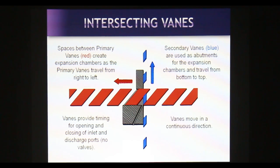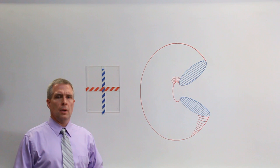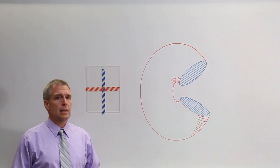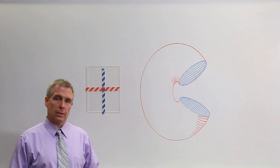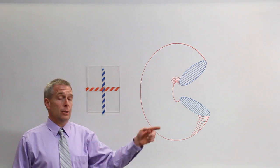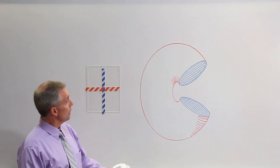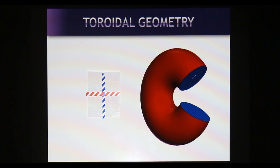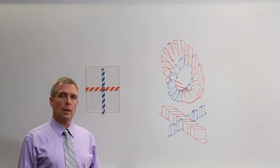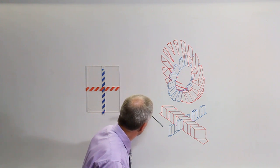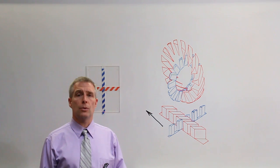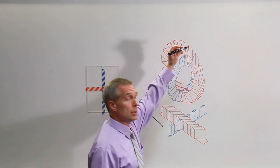Intersecting vanes provide an interesting concept for a positive displacement expander, but what is needed next is a geometry that would allow the vanes to continuously rotate. It turns out there is just such a geometry — the torus. We will utilize the space on the inside of the torus for the blue vanes and the space on the outside of the torus for the red vanes. We have taken the intersecting vanes from the linear world and wrapped them into the toroidal world, where they are now able to rotate.